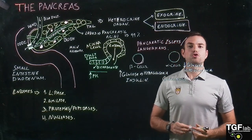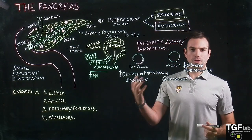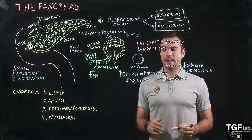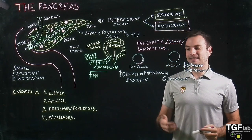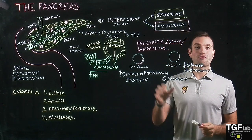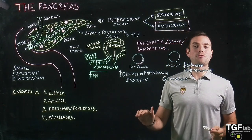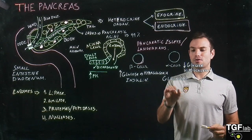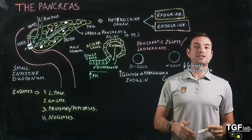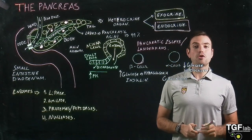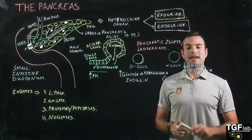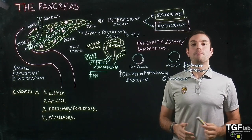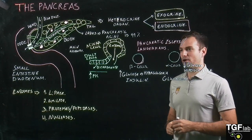Insulin is going to travel through the blood to the different organs of our body, and what it is going to do is reduce the amount of glucose in our blood. In comparison, glucagon is going to increase the glucose to fight against hypoglycemia and restore homeostasis in our body.